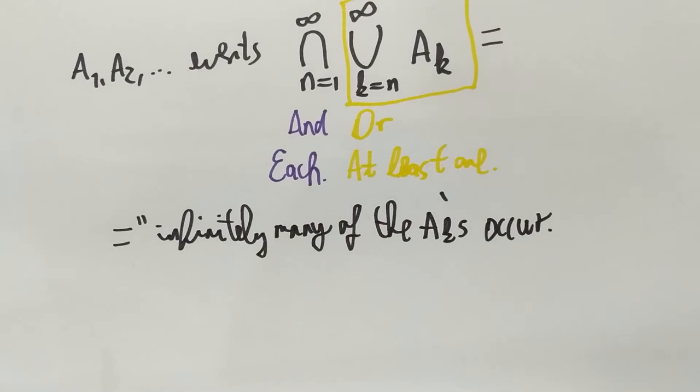Because if you think about it, having one occurring after every index n, there is always a later one, there is always a next one which occurs. That's exactly the case when you have infinitely many of them occur.